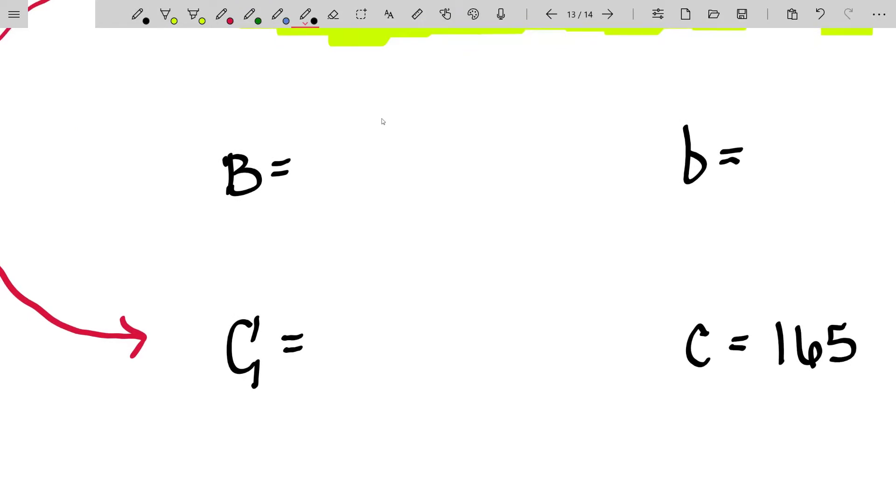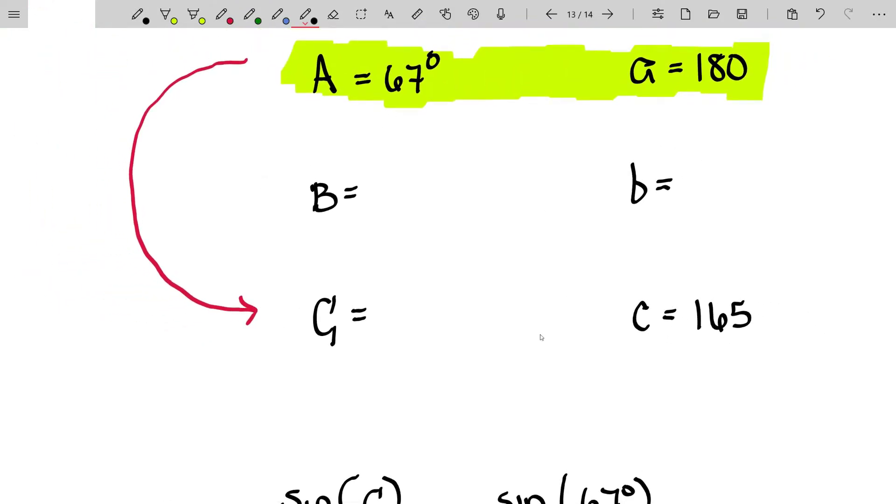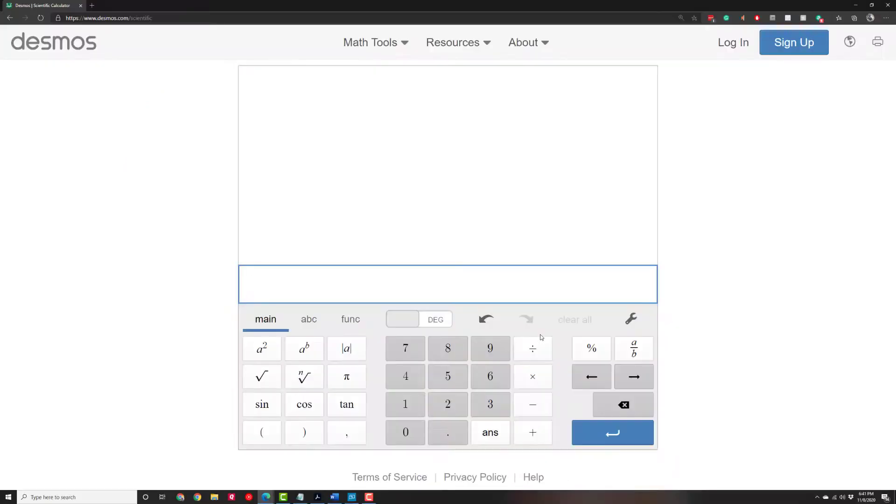We don't want just that answer. We want what side B is, which means we need to keep our answers exact. So let me go ahead and hop over to Desmos. We're going to say that angle C is equal to the arc sine of 165 times the sine of 67. And that's divided by 180. So there's our 57.5 degrees. And remember, we needed to find side B. Well, this will allow us to find angle B because angle B is 180 minus angle C minus the given angle A, which was 67.